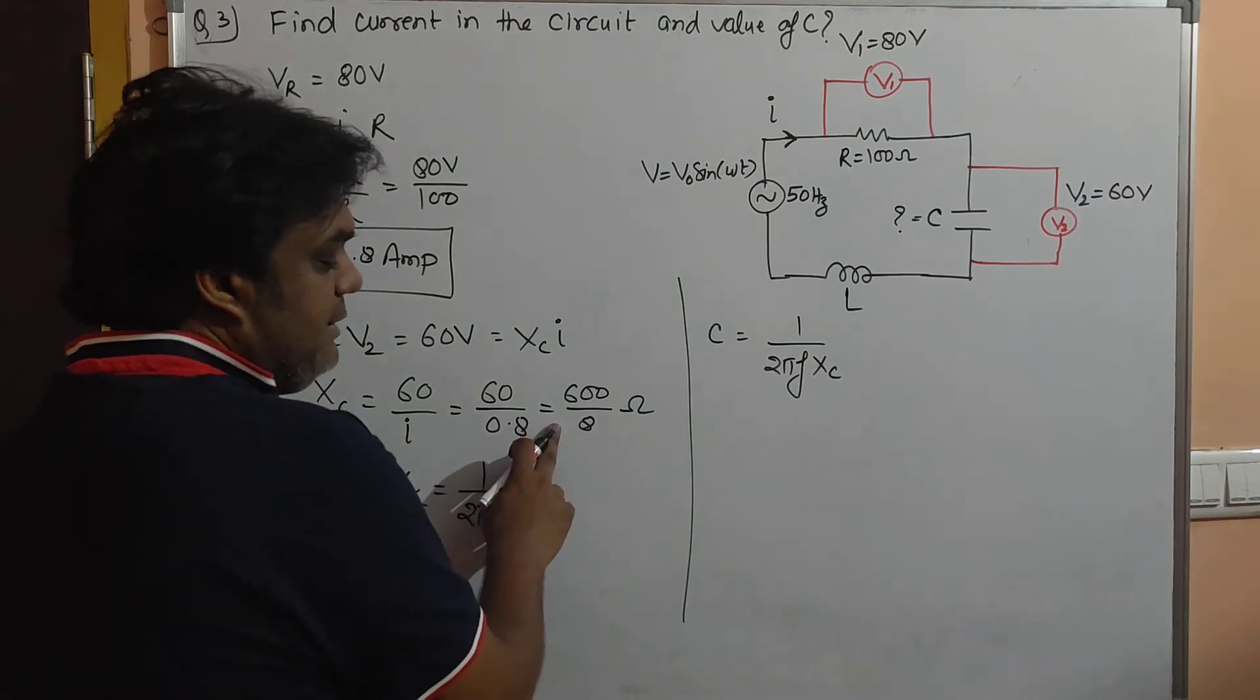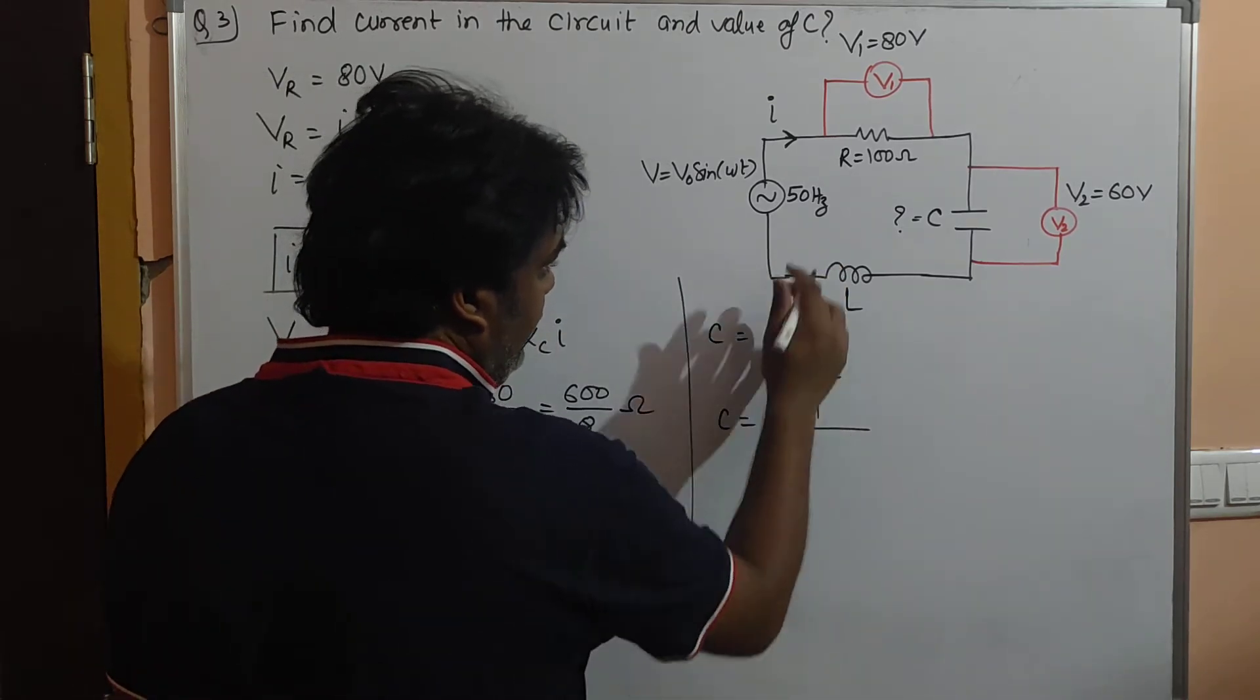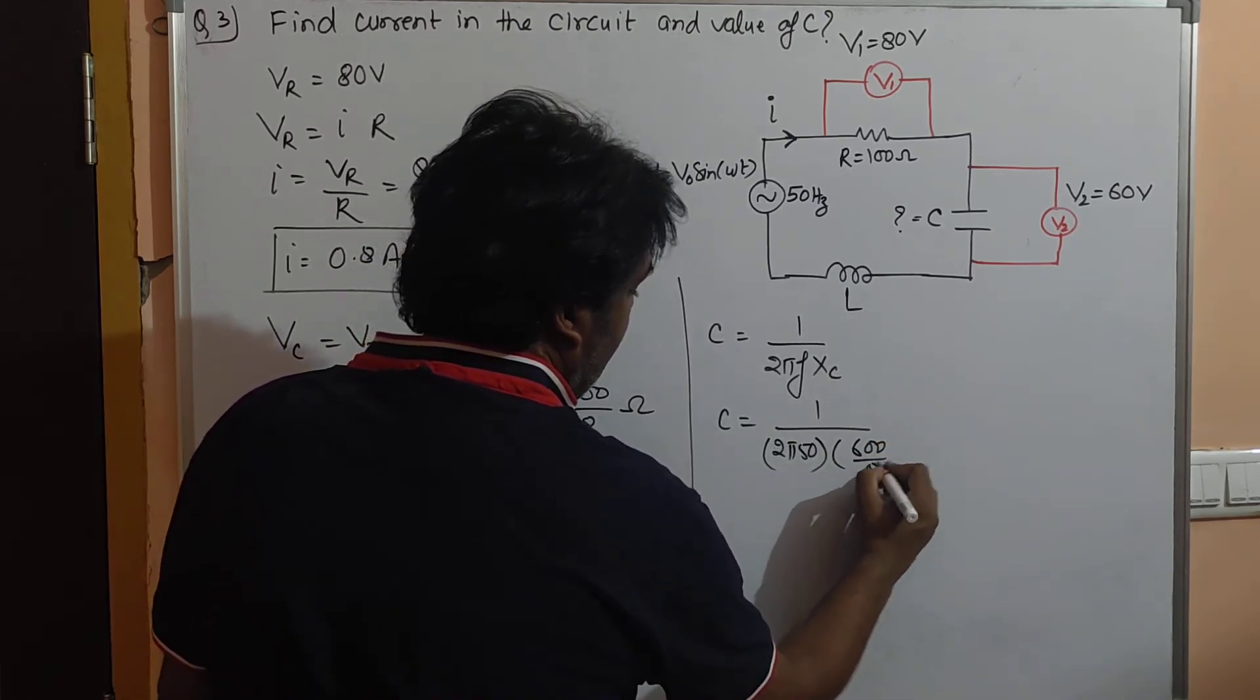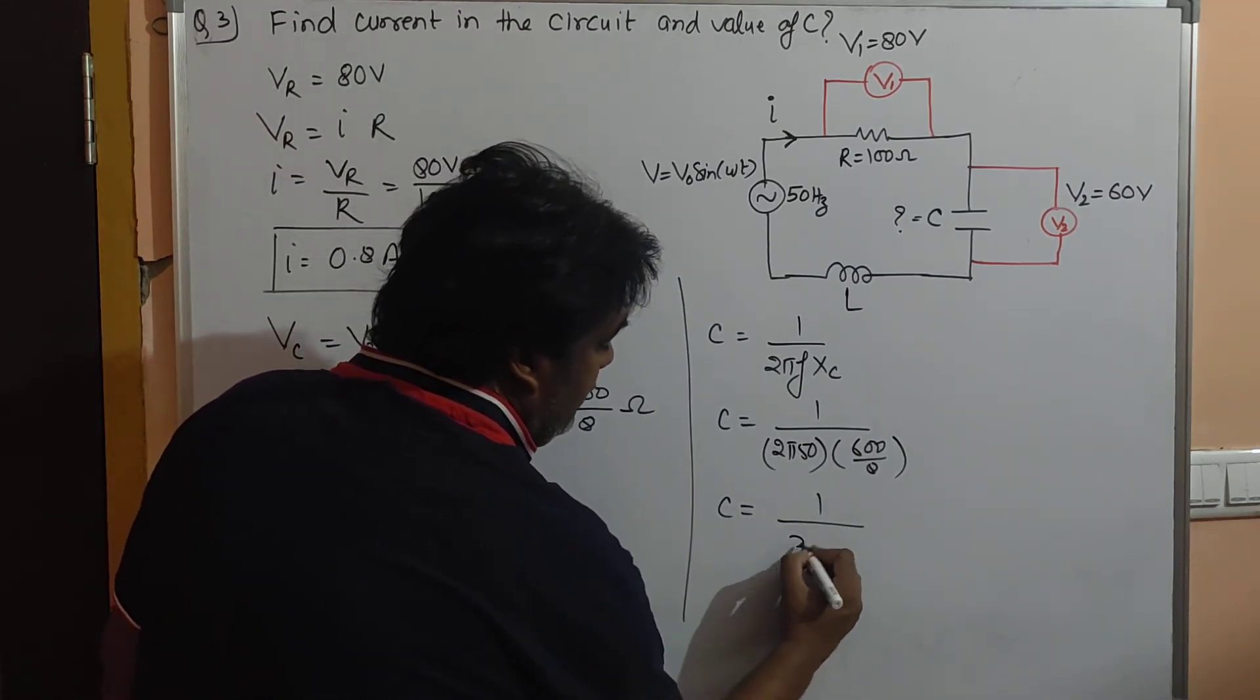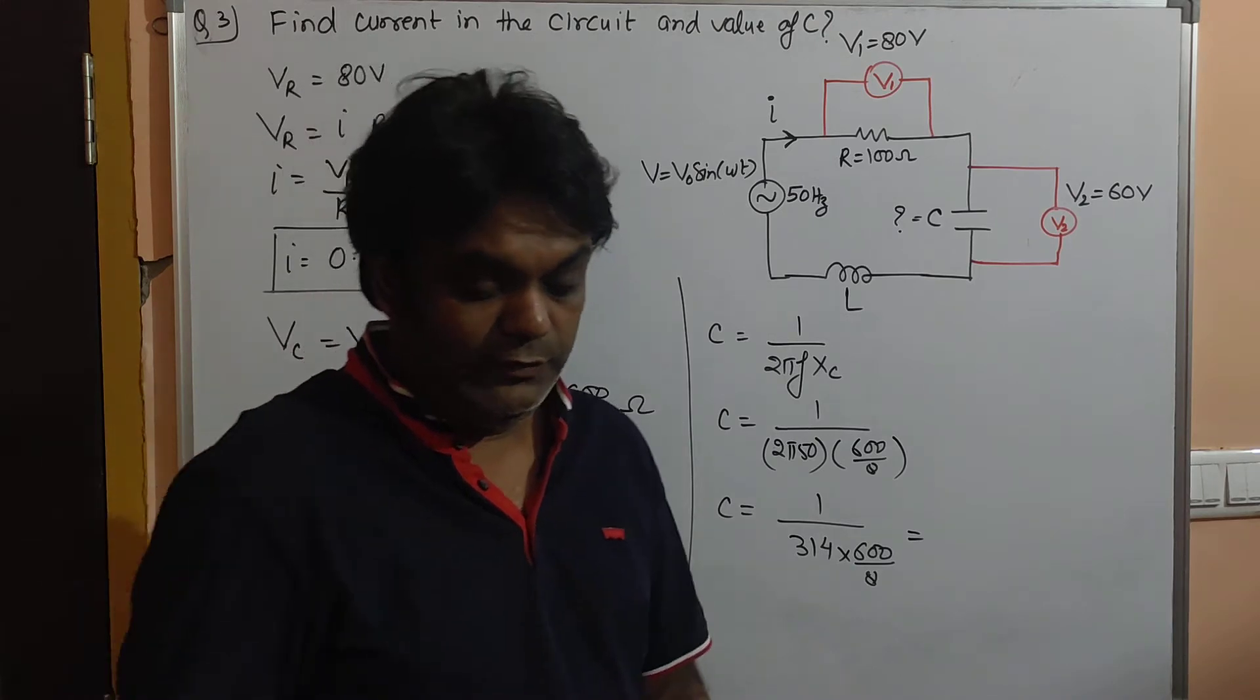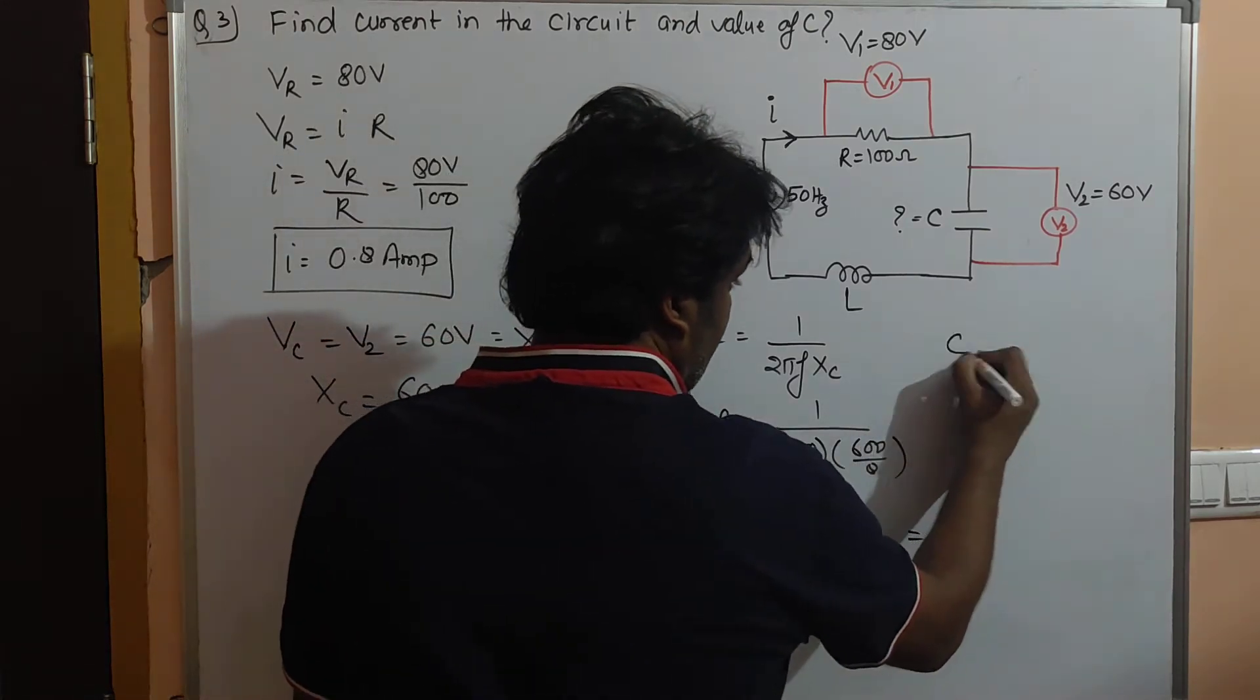Xc is 600 by 8, so C equals 1 upon 2π into 50, since frequency is 50 Hertz, and Xc is 600 by 8. C equals 1 upon 314 into 600 by 8, which will give us the value of capacitance C.